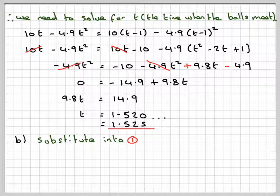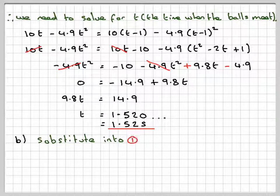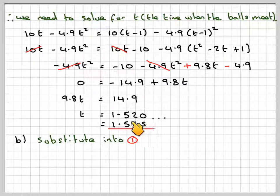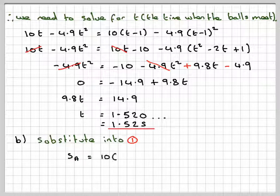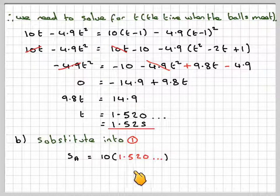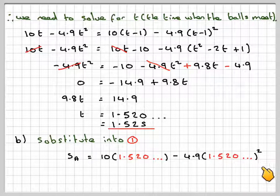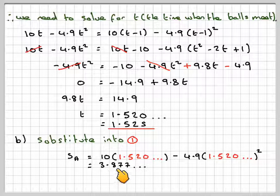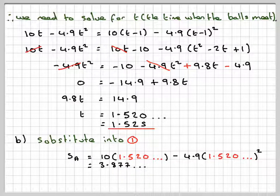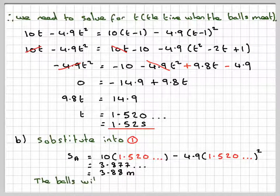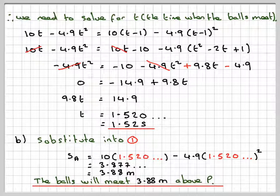To find the position where they meet above P, you need to substitute this into equation 1 or equation 2 for that matter, but it's easy to use equation 1. Don't use the rounded off version. Use this one here. So SA will be 10 times 1.52 minus 4.9 times 1.52 squared. If you've got that in your calculator, you can just press answer here and answer here. That will give you 3.877, which to three significant figures is 3.88 metres. So the balls will meet 3.88 metres above P.